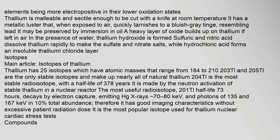Sulfuric and nitric acid dissolve thallium rapidly to make the sulfate and nitrate salts, while hydrochloric acid forms an insoluble thallium(I) chloride layer. Thallium has 25 isotopes with atomic masses ranging from 184 to 210. Thallium-203 and thallium-205 are the only stable isotopes and make up nearly all of natural thallium. Thallium-204, the most stable radioisotope with a half-life of 3.78 years, is made by neutron activation of stable thallium in a nuclear reactor. The most useful radioisotope, thallium-201 with a half-life of 73 hours, decays by electron capture, emitting Hg X-rays at approximately 70 to 80 keV.